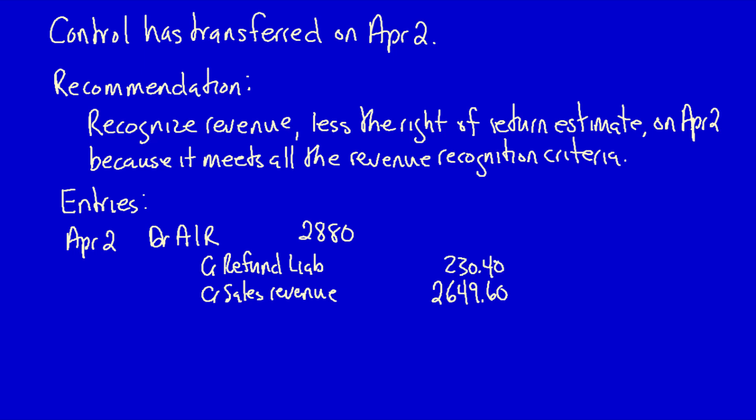The refund liability recognizes that if the customer returns product, we have a legal obligation to return their money or give them a credit. This is not an unearned revenue account — unearned revenue only exists when the customer has paid cash in advance. Instead, this liability account recognizes that eight percent of all products sold are returned, in which case we have to provide a credit to the customer.